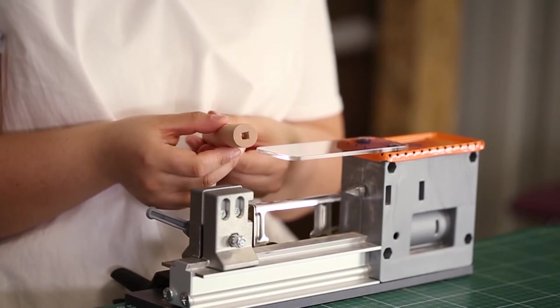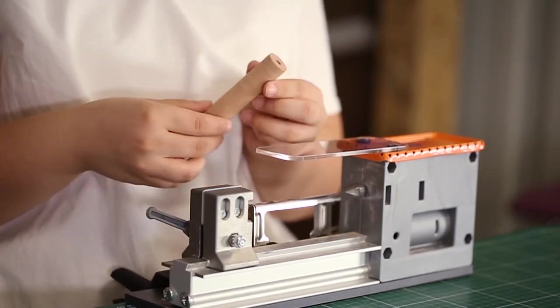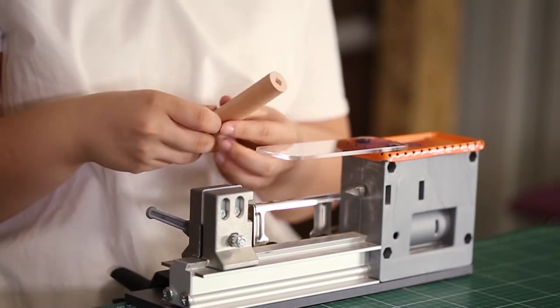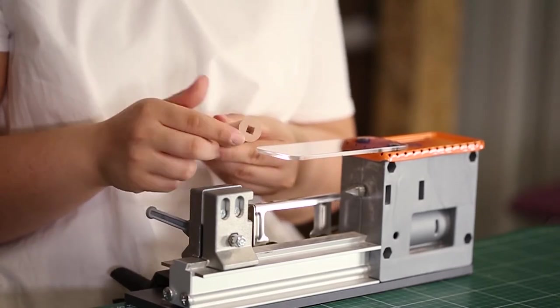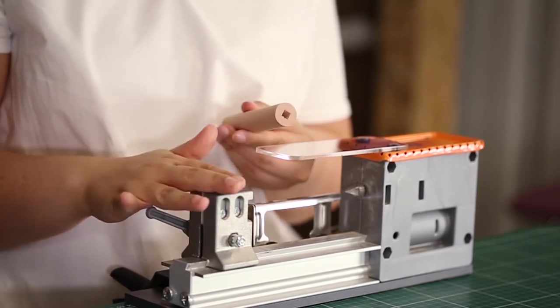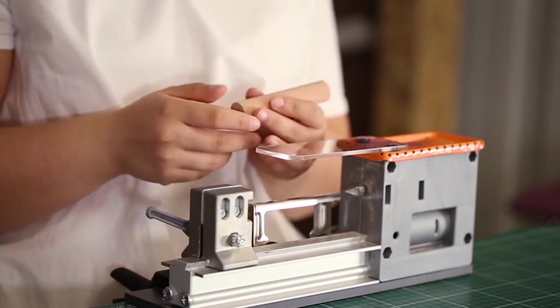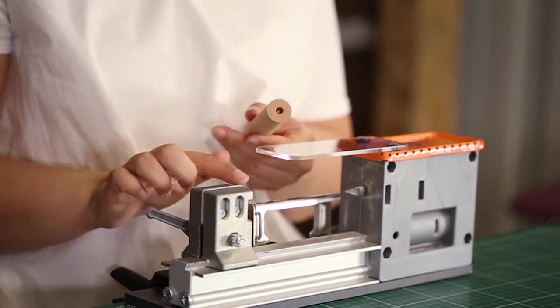Before starting, I want to show the difference between two sides of the cylinder. As you see, one side has a circle and the other one has a square on it. While putting the cylinder onto the lathe, the side which has the square will fit on that point, and the other side will fit on that point.